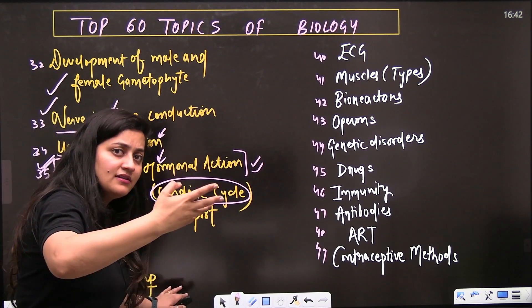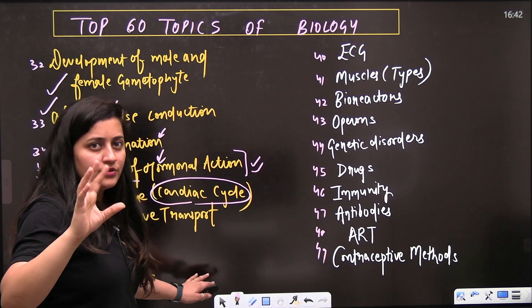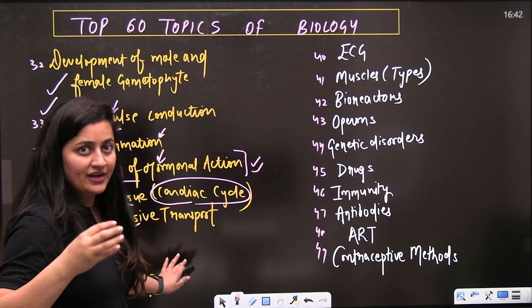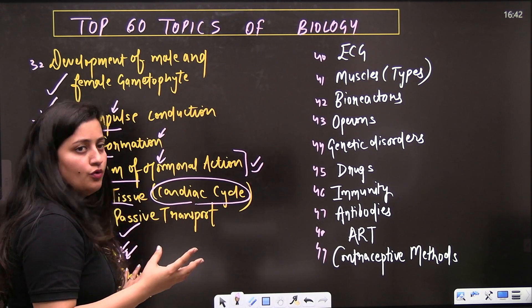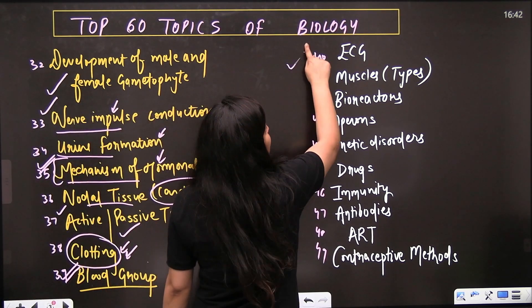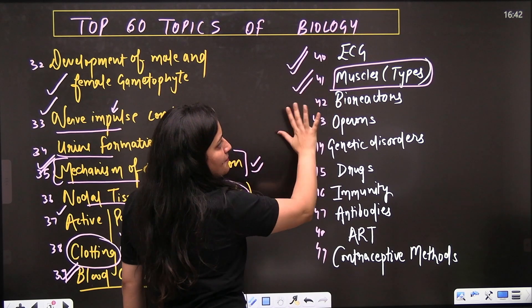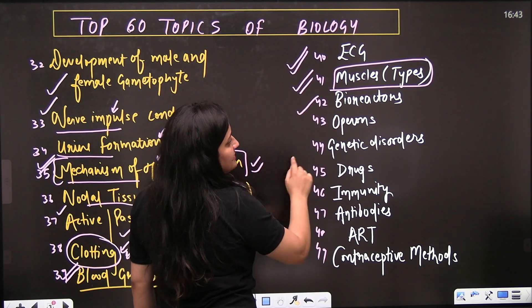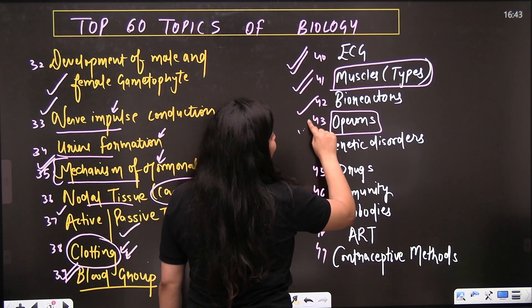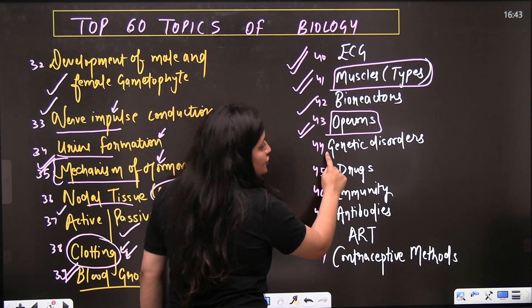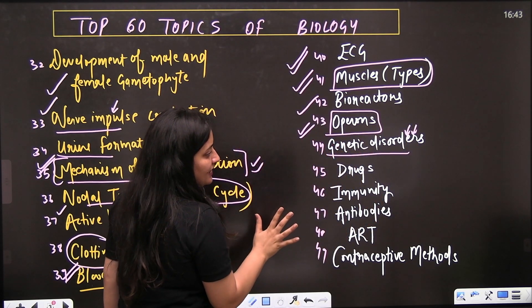About the blood groups - in case of blood groups, even from genetics you can revise the blood groups where there is co-dominance and dominant-recessive relationship, even multiple allelism. Then comes the ECG, muscles - the type of different muscles, the comparison you should know. Bioreactors, operon - very important. Genetic disorders - two questions will come from this particular part.